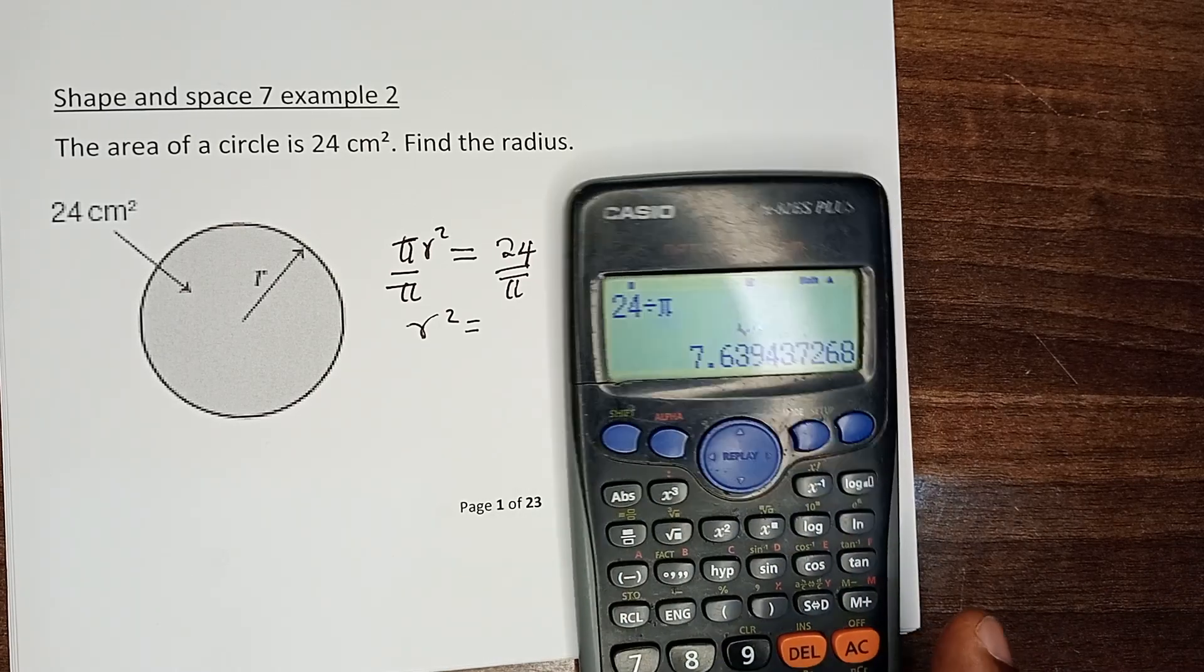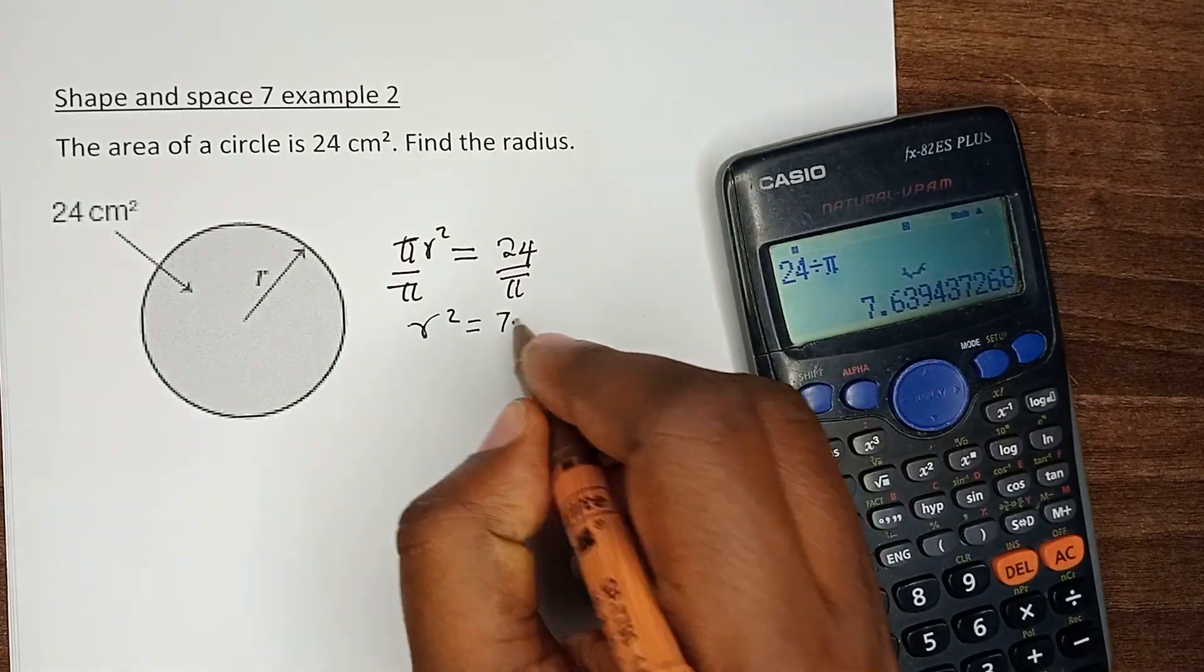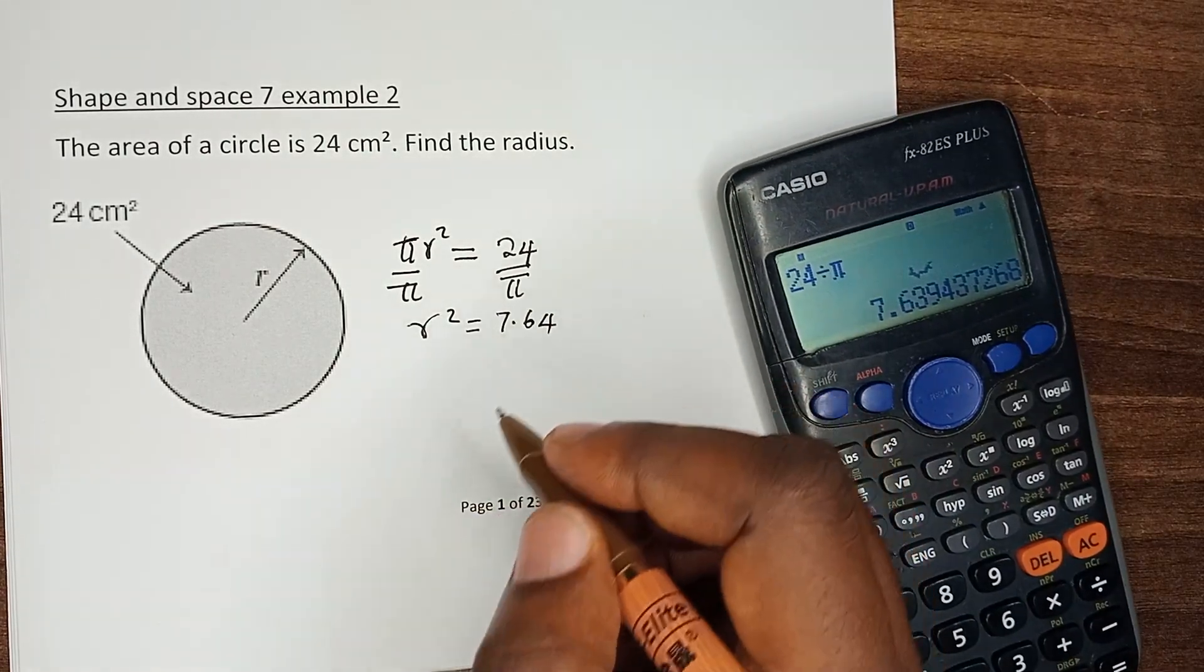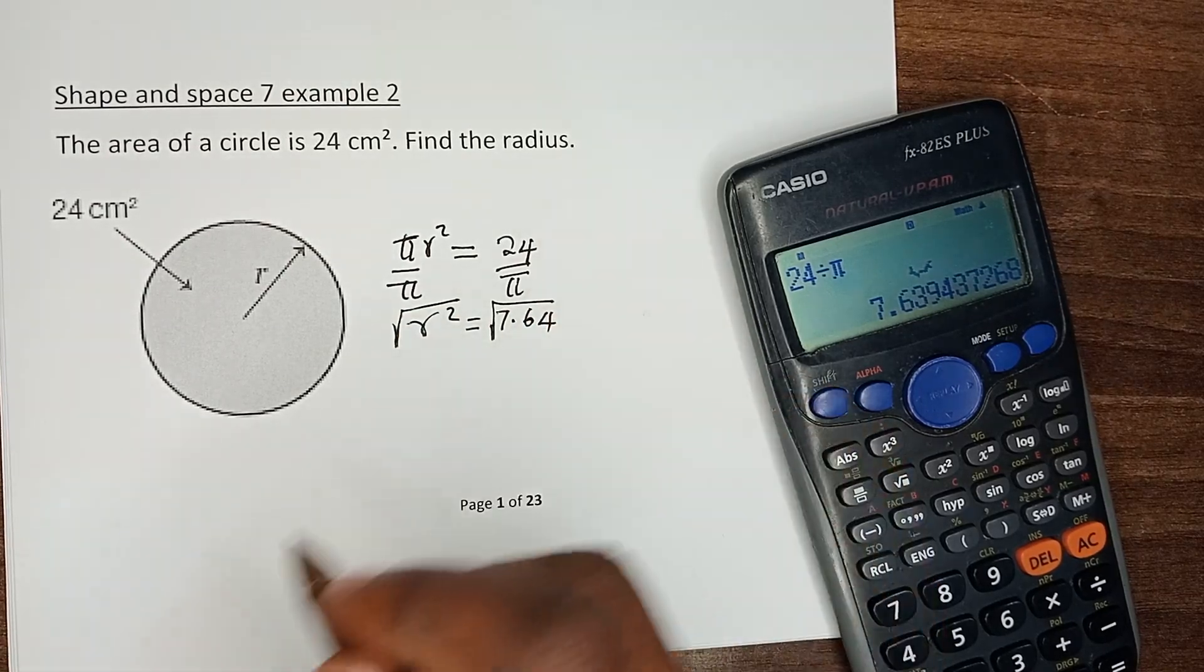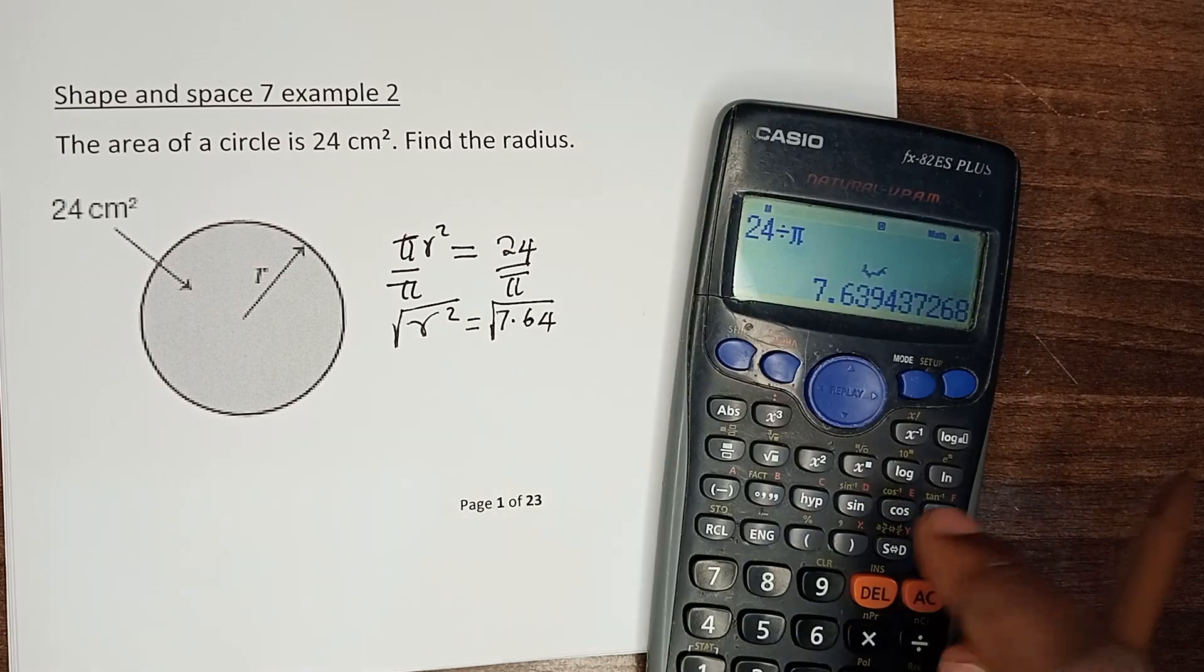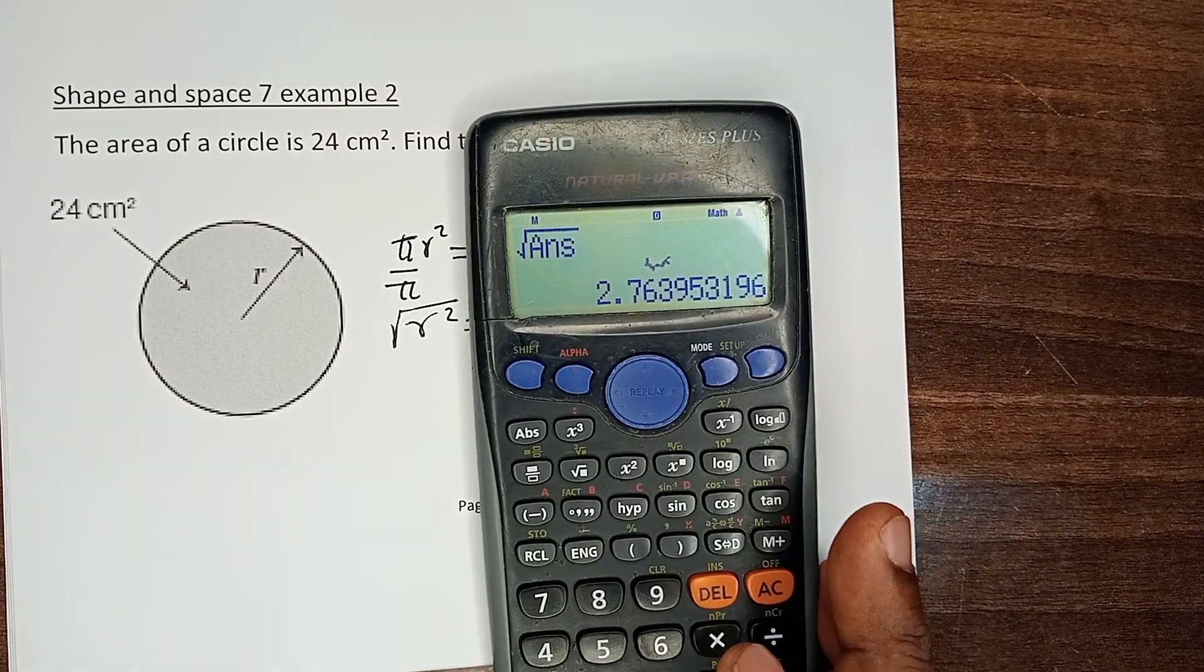This is 7.64 to 2 decimal places. And to get r, we have to look for the square root on both sides, which is giving us 2.764.